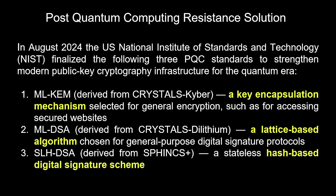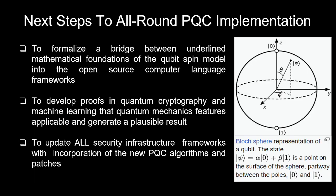In August 2024, the U.S. National Institute of Standards and Technology finalized three post-quantum cryptography standards to strengthen modern public key cryptography infrastructure for the quantum era. The first is ML-KEM, derived from Crystals-Kyber, which is a key encapsulation mechanism selected for general encryption such as accessing secure websites. ML-DSA is a lattice-based algorithm chosen for general-purpose digital signature protocols. And SLH-DSA is a stateless hash-based digital signature scheme.